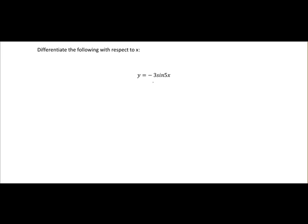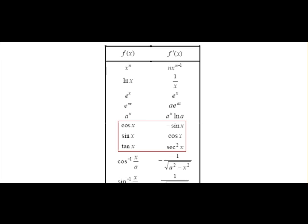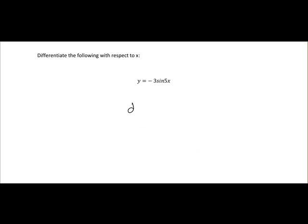Our next question: y equals minus 3 sine(5x). We check what sine differentiates to — from our list, sine differentiates to cos. So dy/dx equals minus 3 times cos(5x). We must also differentiate the number beside sine and multiply — when we differentiate 5x, we get 5, so we multiply by 5. Minus 3 by 5 gives minus 15 cos(5x).